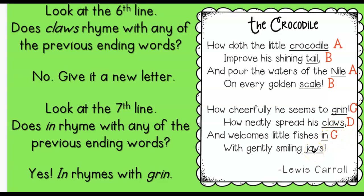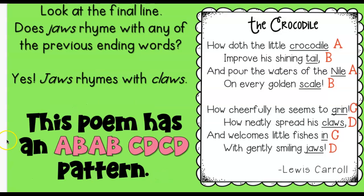What do you guys think about jaws? Take a moment and look through every underlined word and think — what does jaws rhyme with? If you put D, then you're right. So this poem has an A, B, A, B, C, D, C, D pattern. If they had a third stanza, it might go back to rhyming with these words, or it might be EF, EF.